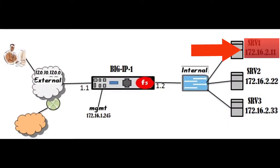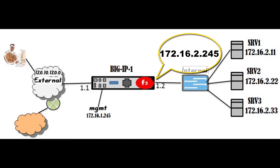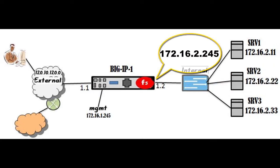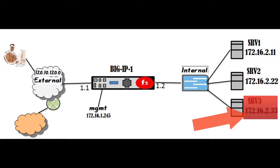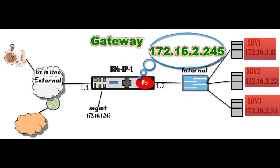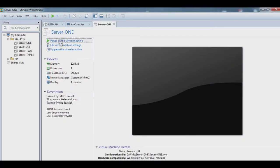Server 1 IP is 172.16.2.11 and the gateway is 172.16.2.245 — that's our BIG-IP address. Server 2's IP address is 172.16.2.22 /24 bit mask with the same gateway 172.16.2.245. Server 3's IP address is 172.16.2.33 /24 bit mask with the same gateway 172.16.2.245. Now we configure accordingly and power on Server 1.